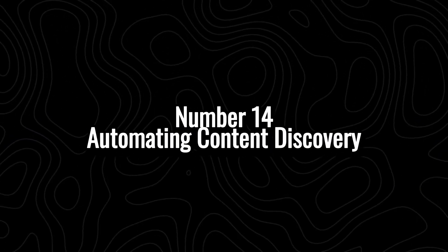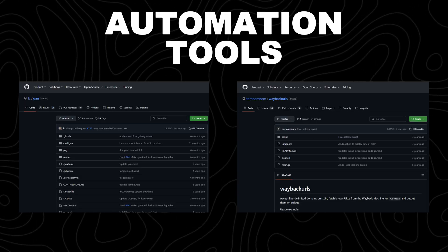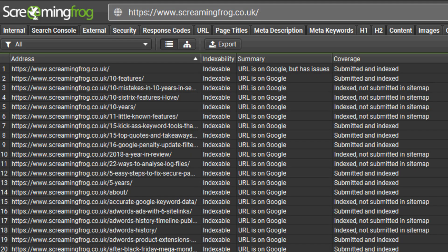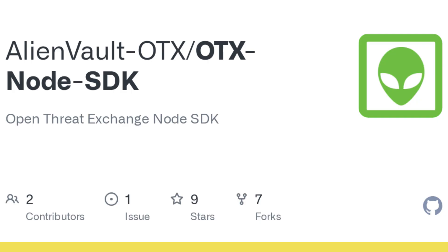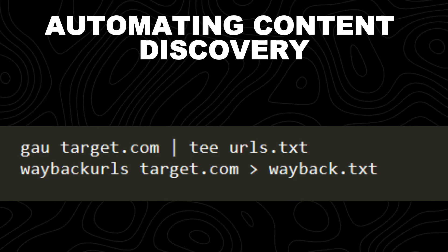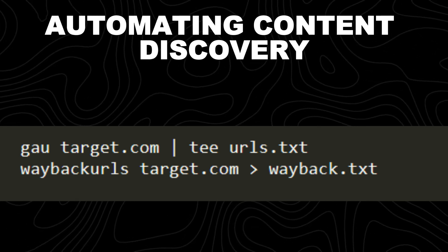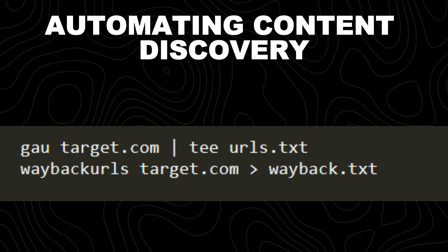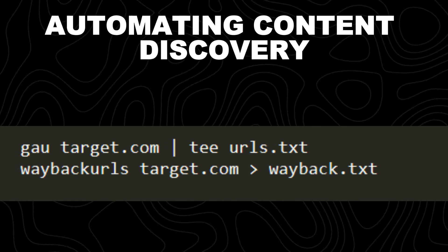Number 14: automating content discovery. Content discovery is essential in bug bounty hunting and penetration testing because it helps uncover hidden endpoints, old directories, and sensitive files that could lead to serious vulnerabilities. Tools like GAU and Wayback URLs automate this process by collecting historical URLs from sources like the Wayback Machine, Common Crawl, and AlienVault OTX. GAU (Get All URLs) fetches URLs from public archives including Google, Wayback Machine, and Common Crawl. Wayback URLs extracts historical URLs from the Wayback Machine.